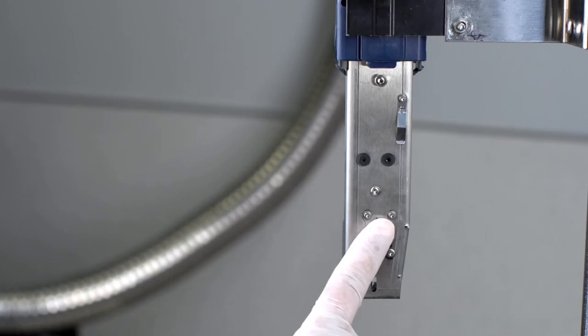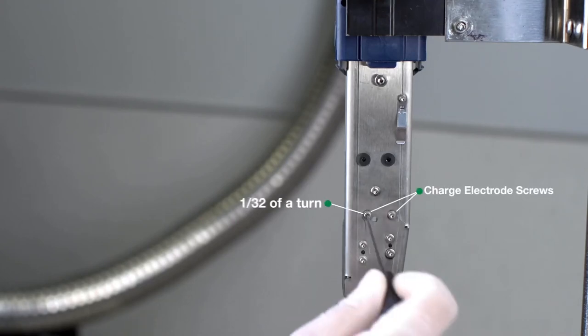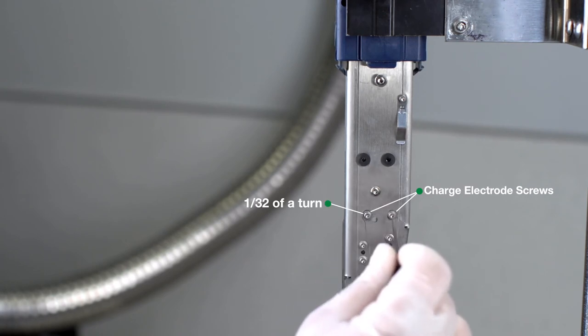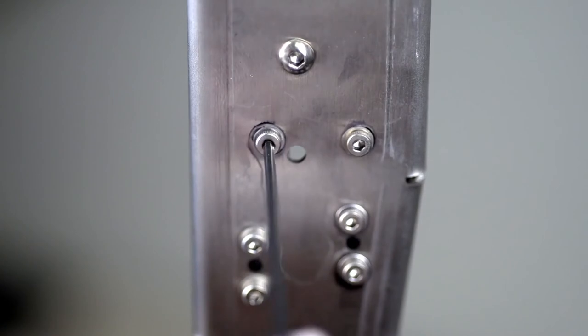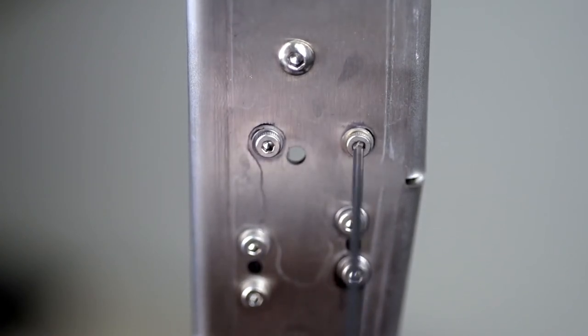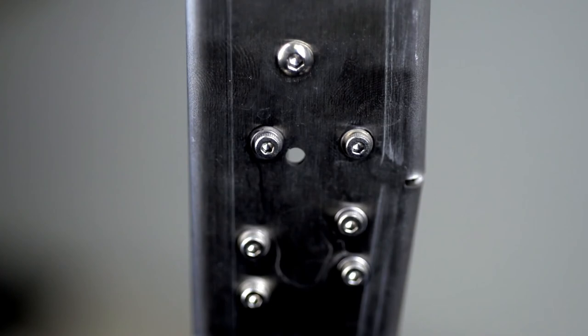Next, loosen the two charge electrode screws located on the back of the unit by turning them 1/32nd of a turn. These screws need to be loose enough to allow for adjustment, yet tight enough to hold the charge electrode in place.